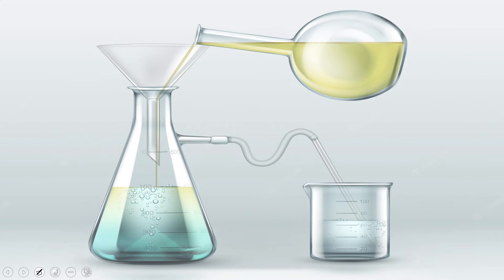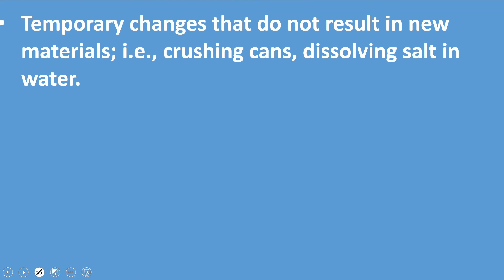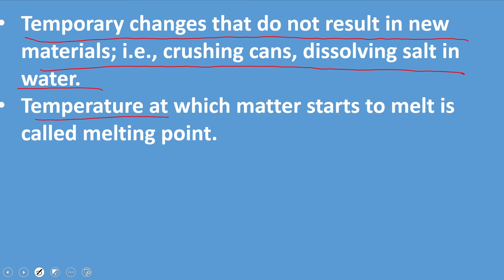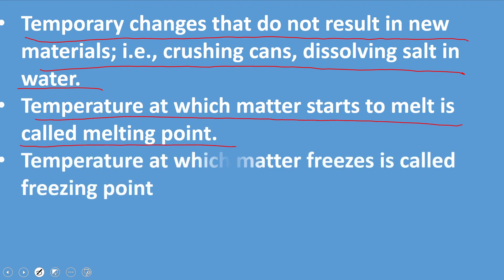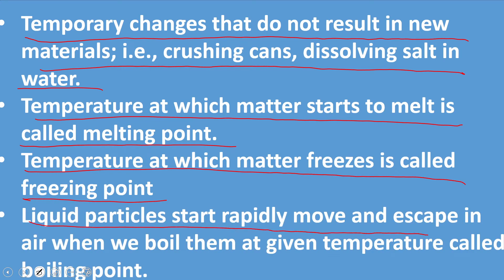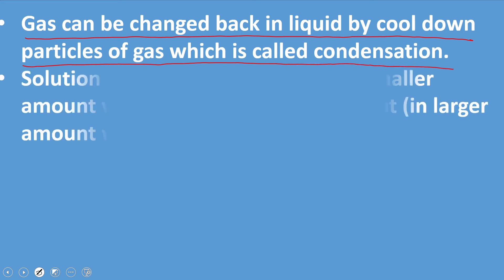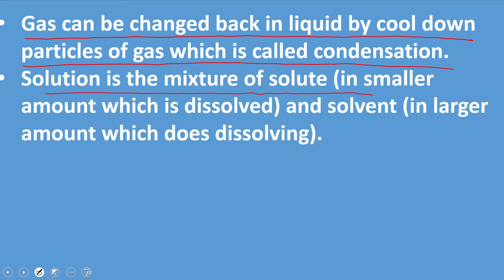I hope everybody has done it — please submit it to your teacher for evaluation. Now is the time for wrap-up. In this chapter we have learned that temporary changes that do not result in new materials, like crushing cans or dissolving salt in water, are physical changes. The temperature at which a metal starts to melt is called its melting point. The temperature at which a metal freezes is called its freezing point. Liquid particles start rapidly escaping into the air when boiled at a given temperature — this is called its boiling point.